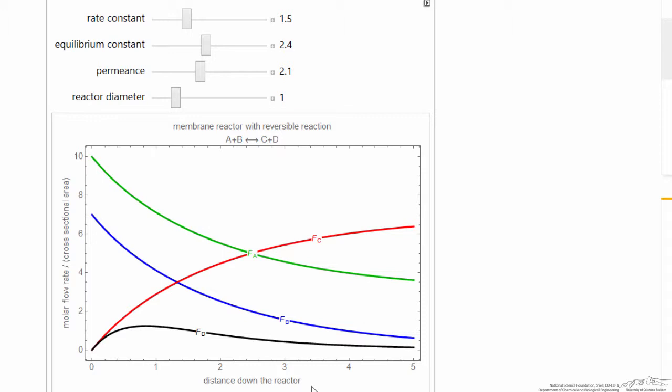The product C is what we're desired to make, and we're moving D through the membrane, so you can see when the permeance is significant, the flow rate of D is significantly lower than the flow rate of C.